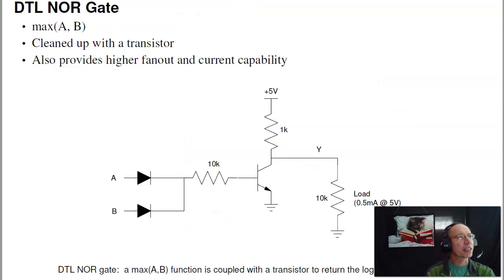To fix that, what DTL logic does is it takes the previous maximum circuit and then adds a transistor. What that does is that cleans up the logic level. It converts this either to 5 volts when the transistor is off, or 0 volts, actually 0.2 volts, when it's on. And it also allows me to drive a bigger load.